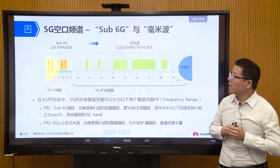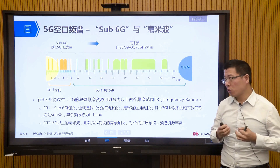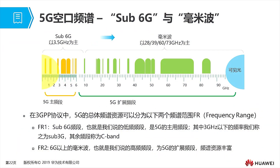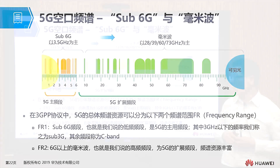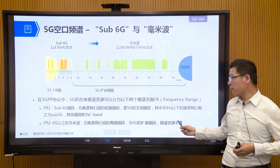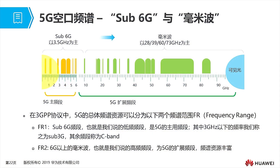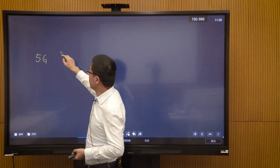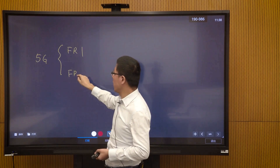The first key technology area is spectral resources, always the most important in mobile communications. The main spectral resources used in 5G are sub-6G and millimeter wave. In China, sub-6G is mainly used; some overseas regions use millimeter wave. In the 3GPP protocol, 5G spectral resources are divided into two parts: Frequency Range 1 (FR1), which is the sub-6G low-frequency band, and Frequency Range 2 (FR2), which is millimeter wave — the high-frequency band. Low frequency ensures coverage; high frequency expands capacity.